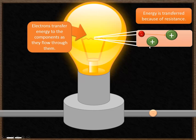Because of this resistance, the amount of energy those electrons have is significantly reduced, and the amount of heat energy stored inside the wire goes up. The reason why the filament wire has such a high resistance is because it's very thin. The connecting wires are much thicker, and that reduces the amount of resistance.